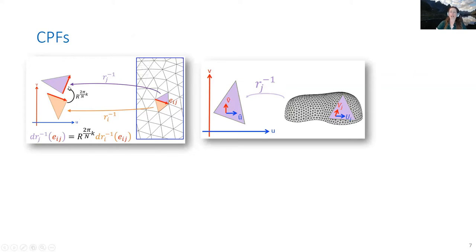up to a rotation by a quantized amount, which depends on the grid you're using. It's going to be 90 degrees for quads or 60 degrees for triangles, etc.